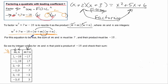So all we have to do is think about what two things multiply to give negative 18 and then add up to give a positive 7.